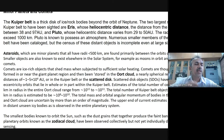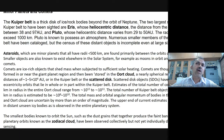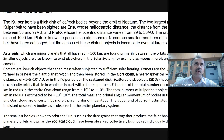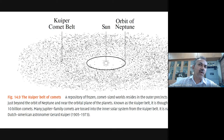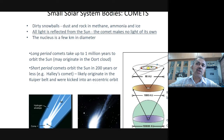Beyond Neptune, there are a lot of solar system objects — what we call the Kuiper Belt — a thick disc of small objects beyond the orbit of Neptune, also known as the scattered disc. Beyond that is the Oort Cloud. In the Kuiper Belt, you find comets, Pluto (which has an atmosphere), and many other small undiscovered objects.